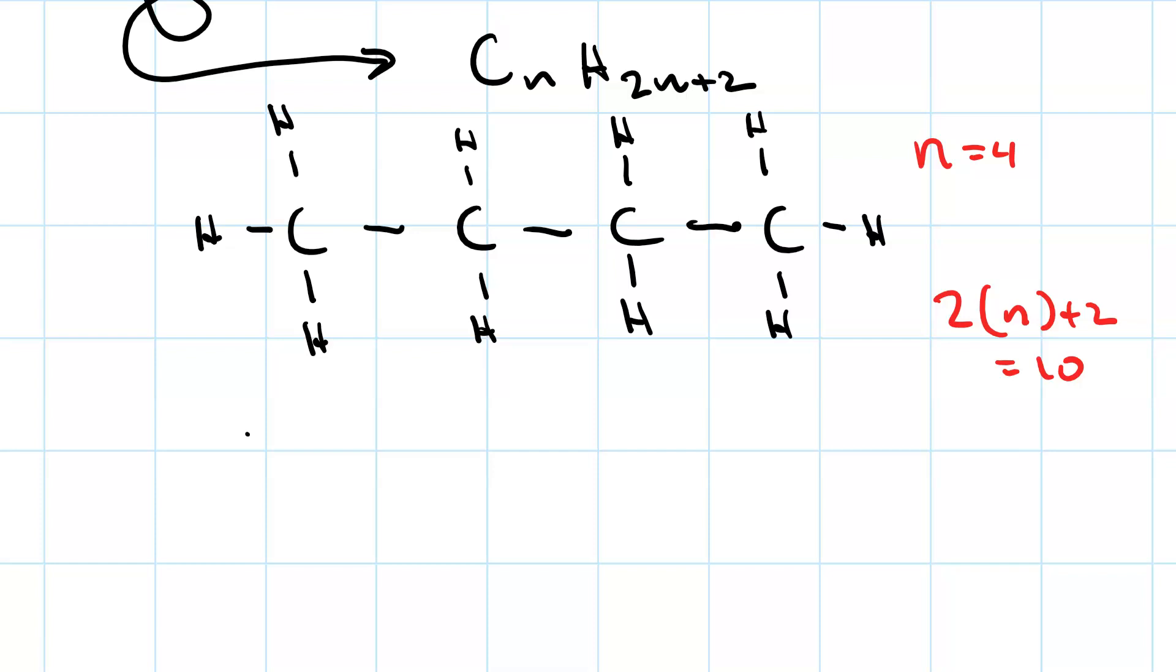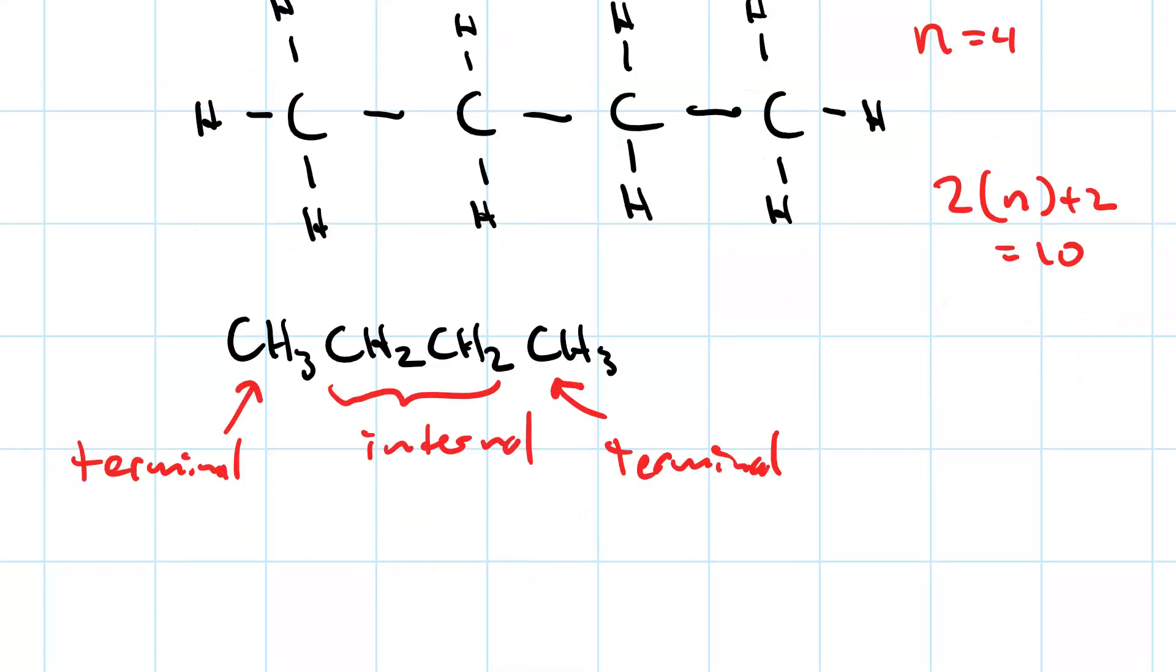So you can think of this as CH3, CH2, CH2, CH3. Our terminal carbons are CH3s, and our internal carbons are CH2s. Of course a bond line structure is the easiest way to draw this.